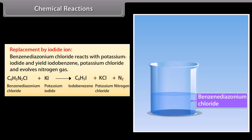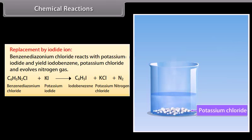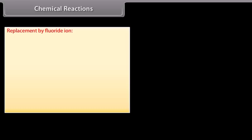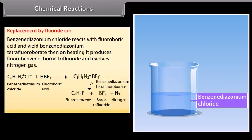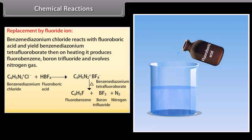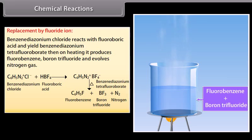Replacement by iodide: Benzene diazonium chloride reacts with potassium iodide to yield iodobenzene, potassium chloride, and nitrogen gas. Replacement by fluoride: Benzene diazonium chloride reacts with fluoroboric acid to yield benzene diazonium tetrafluoroborate, which on heating produces fluorobenzene, boron trifluoride, and nitrogen gas.